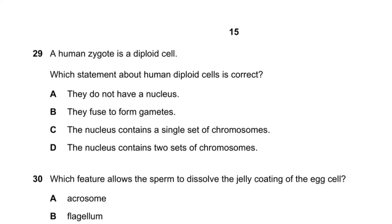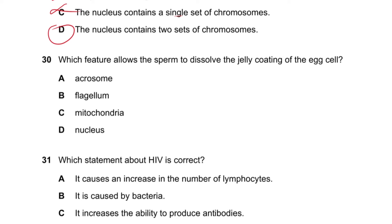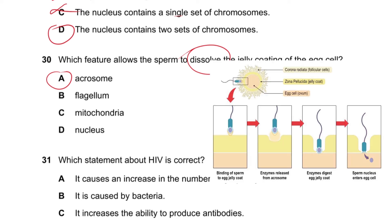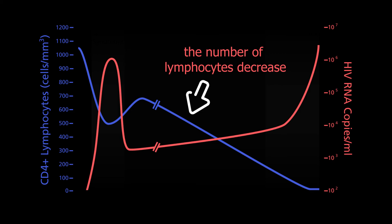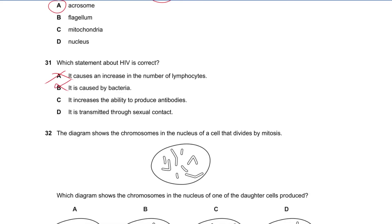Question number 29 says a human zygote is a diploid cell. Which statement about human diploid cells is correct? They don't have a nucleus? No. They fuse to form gametes? No, because the sex cells are haploid so that they can come together and form a diploid cell. The nucleus contains a single set of chromosomes? No, it contains two sets of chromosomes. Question number 30 says which feature allows the sperm to dissolve the jelly? It's the acrosome on its tip which then releases chemicals or enzymes to break down the jelly coating of the egg. Question 31 says which statement about HIV is correct? It causes an increase in the number? No. It's caused by bacteria? No, it's caused by a virus. It stands for Human Immunodeficiency Virus. It increases the ability to produce antibodies? You wish you would have been able to fight it, but no. It's transmitted by sexual contact? Yes.